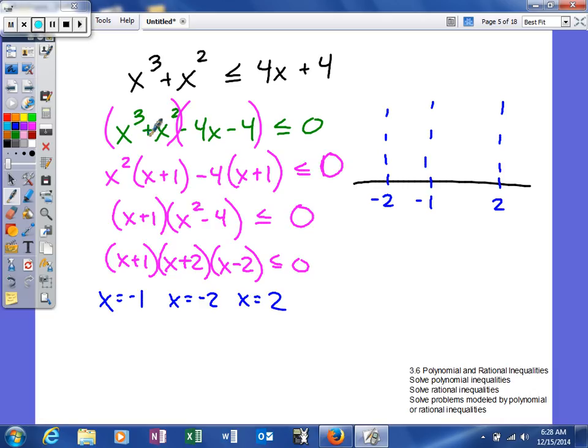But luckily we have a decent idea of what our graph looks like. Our leading coefficient is positive and the degree is odd. So the left side will go down, the right side will go up. Each of the zeros has a multiplicity of 1.